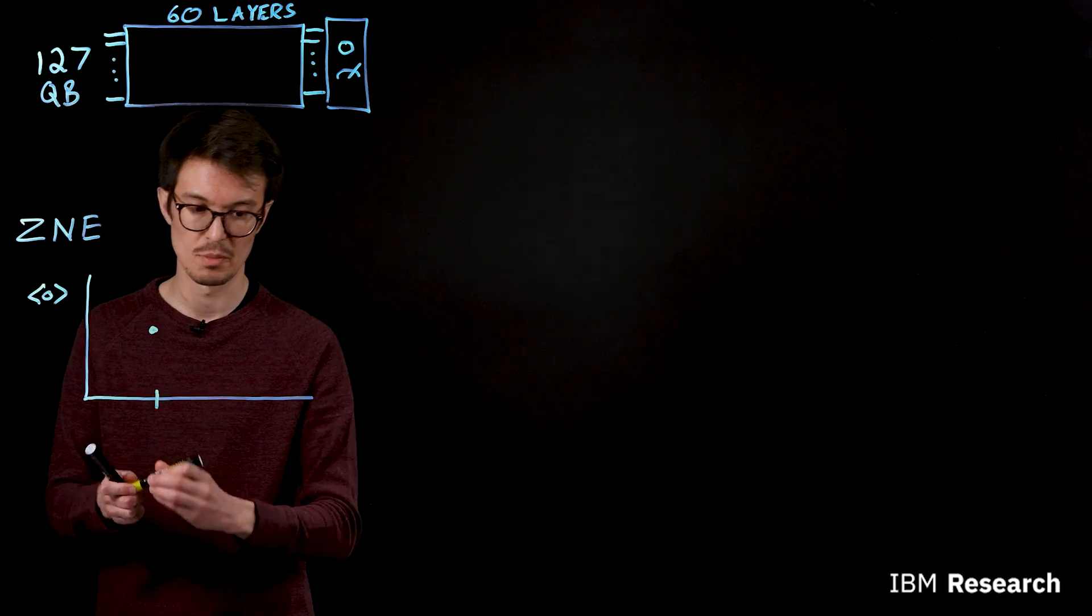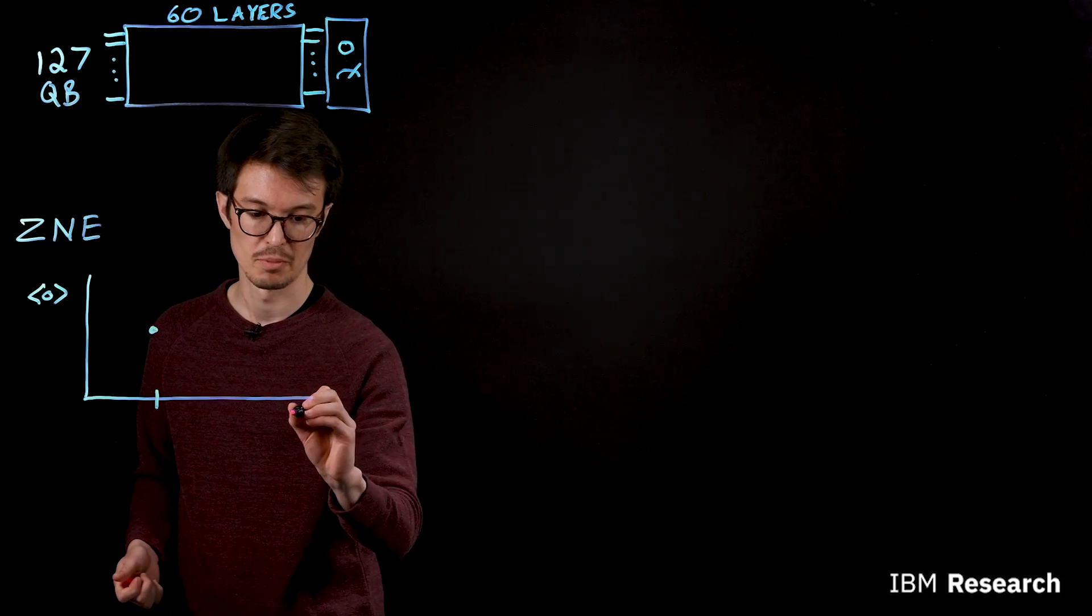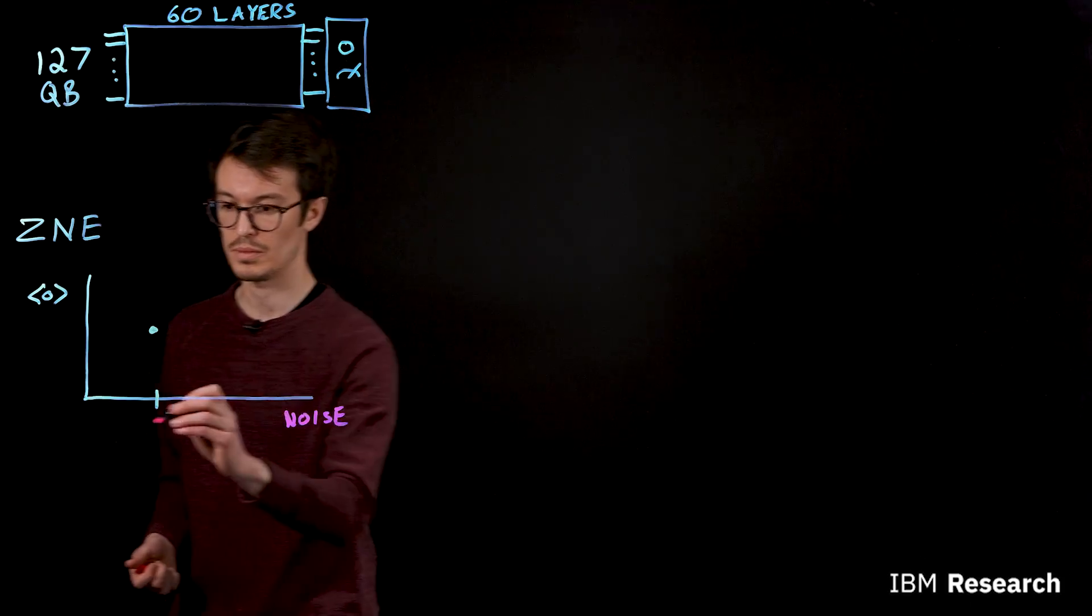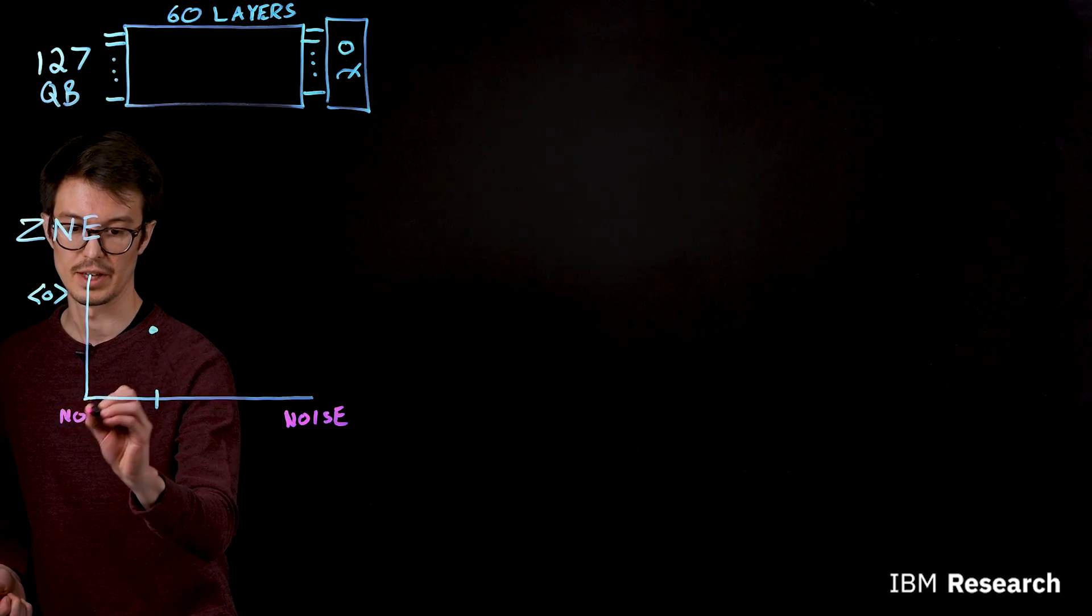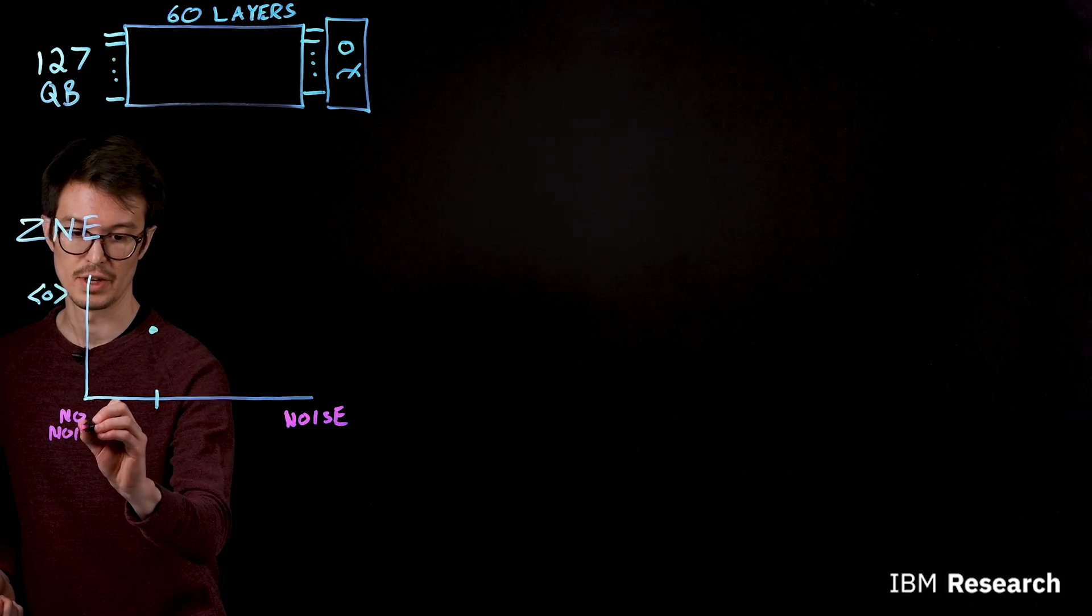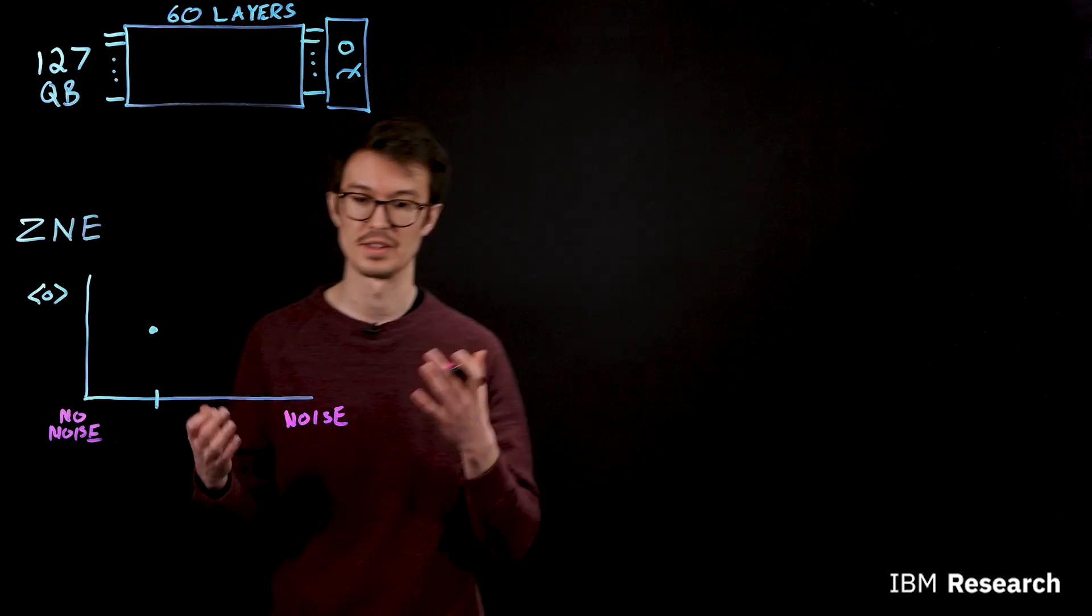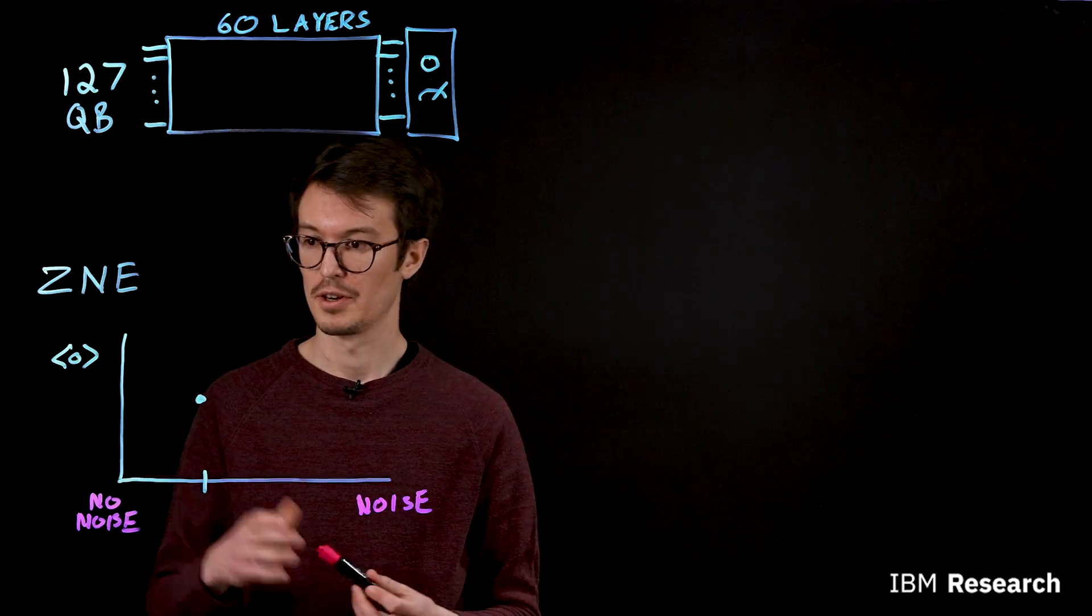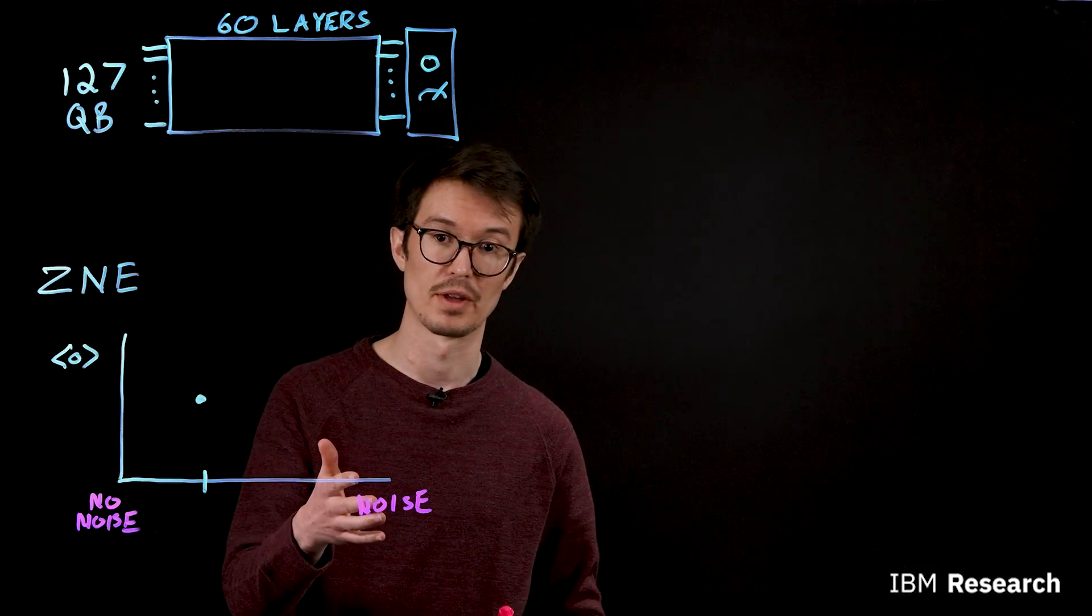However, this result may be made inaccurate by the presence of noise on the quantum hardware. Ideally, we'd like to get an estimate of what the answer would be if we solved this problem without any noise. So how do we correct for this inaccuracy brought about by the noise on the hardware?